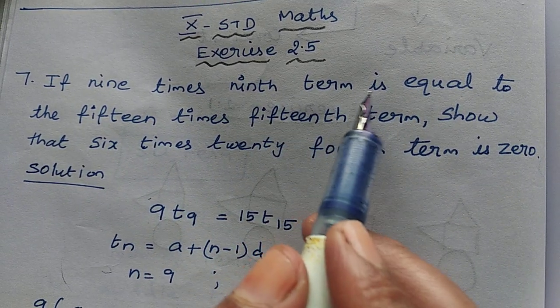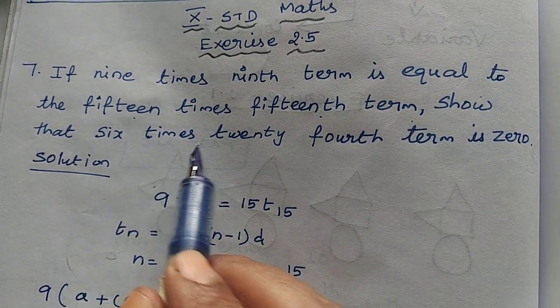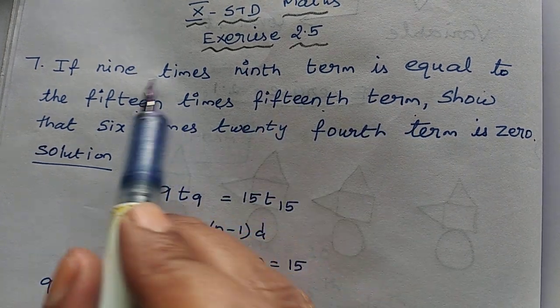If 9 times 9th term is equal to 15 times 15th term, show that 6 times 24th term is 0. First question read thoroughly, understand the question.